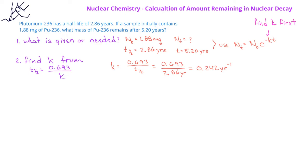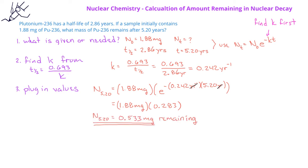Now that we have the rate constant, we can plug in the values. The amount of plutonium-236 remaining after 5.20 years is equal to 1.88 mg multiplied by e to the negative 0.242 reciprocal years times 5.20 years. This gives us 1.88 mg times 0.283. When we multiply this, we find that after 5.20 years, we will have 0.533 mg of plutonium-236 remaining.